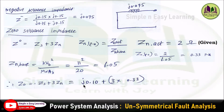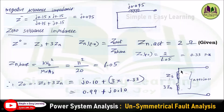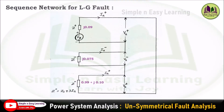Now Z0 = Zs + 3×Zn(pu) = J0.10 + 3×0.33 = 0.99 + J0.10. This is the zero sequence impedance. It can be represented in the sequence network with impedance Zs + 3Zn having value 0.99 + J0.10. The complete sequence network for this single line to ground fault is drawn by substituting all values.